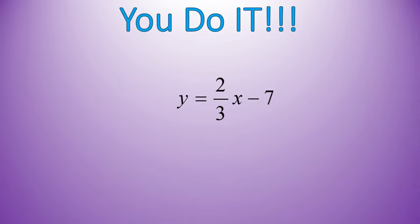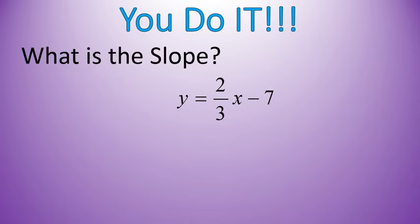Alright, your turn. I'm giving you a bit of a harder one, but I want you to tell me what is the slope. Follow exactly the same rules that I just showed you. Put your mouse over where the slope is. Did you put it right there? Two-thirds. That's my slope. Were you able to get that? That's where slope is located.